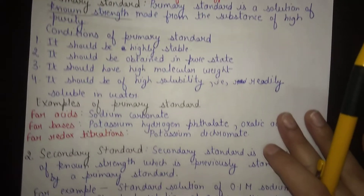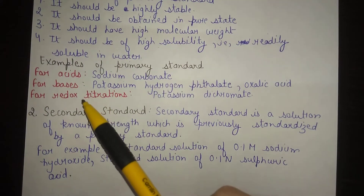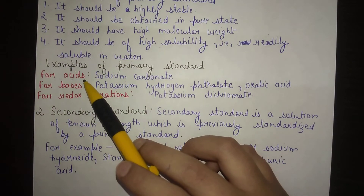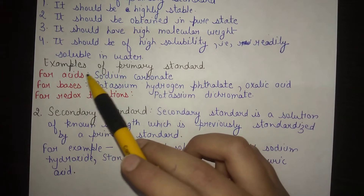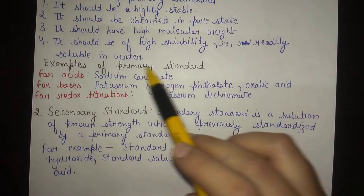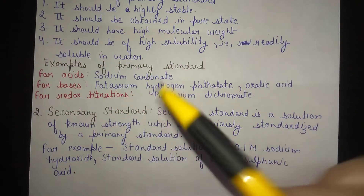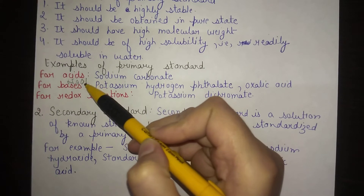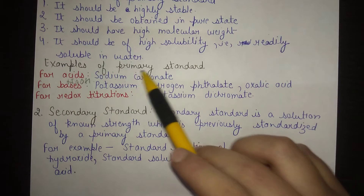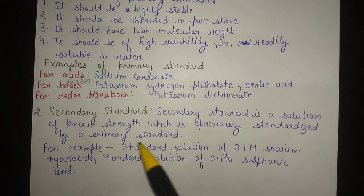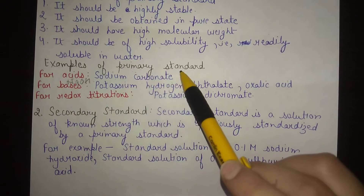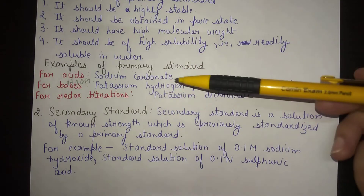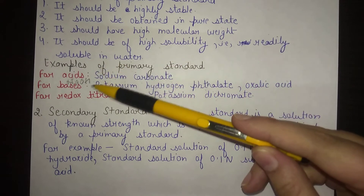For example, to find the strength of an acid such as HCl, we titrate it with the primary standard sodium carbonate. To find the strength of a base such as sodium hydroxide, it can be determined by titrating it with primary standards such as potassium hydrogen phthalate and oxalic acid. For redox titrations, the primary standard generally used is potassium dichromate.